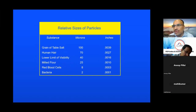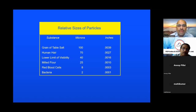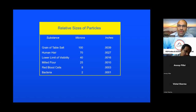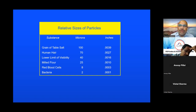Just to give a reference of what microns mean: a grain of table salt is 100 microns, human hair is 70 microns at the tip, and for someone with 20-20 eyesight, the visibility limit is 40 microns. We are talking about hydraulic filtration where the micron ratings are 2, 5, 10, and 20 microns. The particles you want to filter are not visible to the human eye.